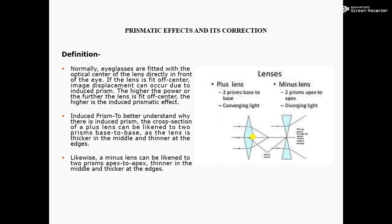Induced prism: To better understand why there is induced prism, the cross section of a plus lens can be like two prisms base to base, as the lens is thicker in the middle and thinner at the edge.